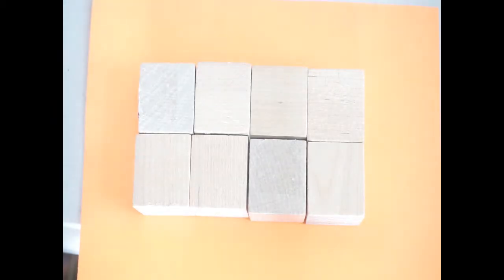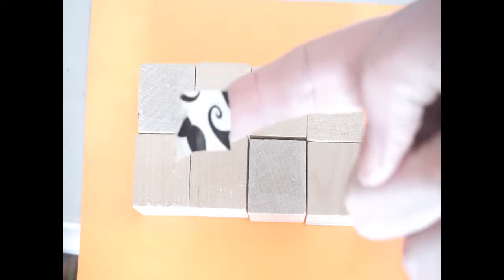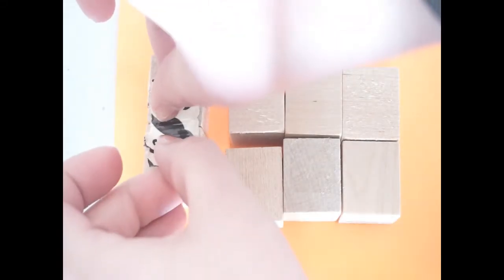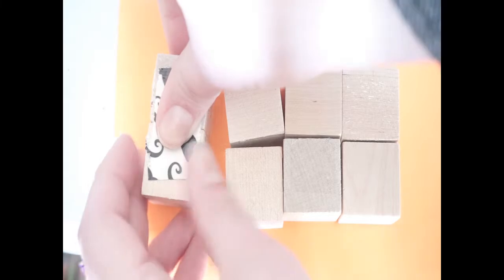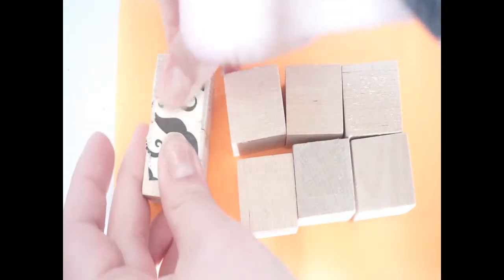So first you're going to lay out your cubes in front of you like this. They don't have to be horizontal, they can be vertical. And you're going to take four pieces of duct tape and duct tape them as seen here.